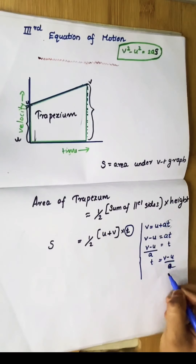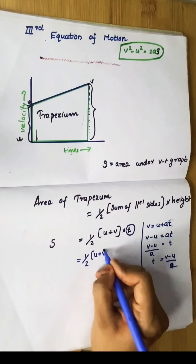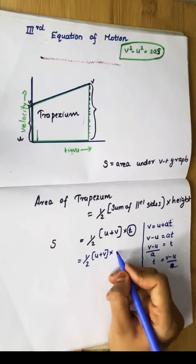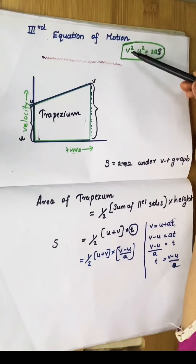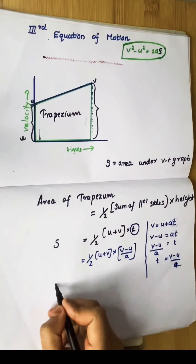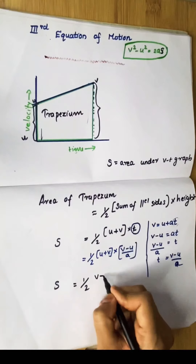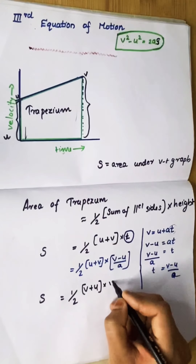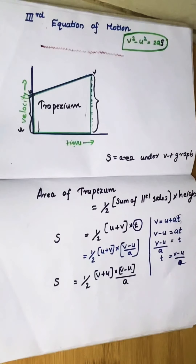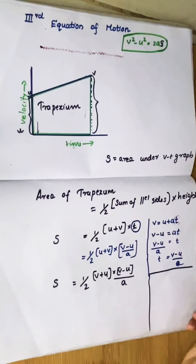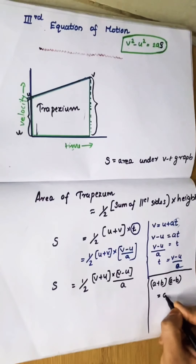We replace t with (v minus u) by a in our equation. So s equals half into (u plus v) into (v minus u) by a. Rearranging, we can write s equals half into (v plus u) into (v minus u) divided by a.